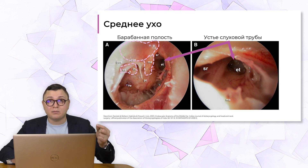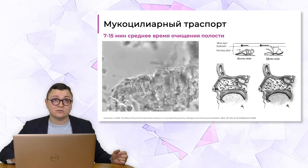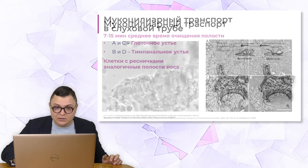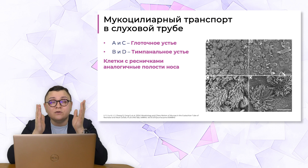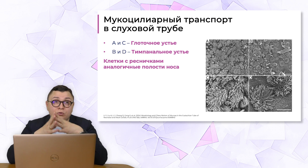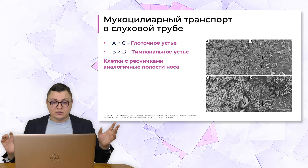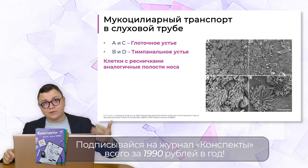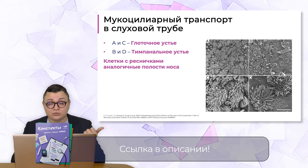Второй очень важный момент – в слуховой трубе, так же как в полости носа, присутствует мукоцилиарный клиренс. Барабанная полость очищается через слуховую трубу путём действия мукоцилиарного транспорта. Это доказано на электронной микроскопии: в глоточном устье и в тимпанальном устье слуховой трубы присутствуют клетки с ресничками, характерные для полости носа и всего респираторного тракта. Фактически не зря говорят, что барабанная полость – это пятая пазуха носа.